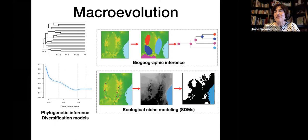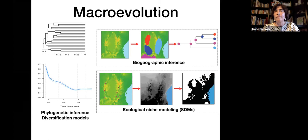When dealing with the macroevolutionary lens, we use approaches such as inferring the phylogeny of a group using molecular data, using diversification models to infer the rate of diversification and extinction, and biogeographic models to infer the rate of dispersal — for example, likelihood-based models. We can also focus on the ecological part of macroevolution: not only where species live but why, using ecological niche modeling to infer the climatic preferences of ancestors — the realm of phylogenetic ecological biogeography.